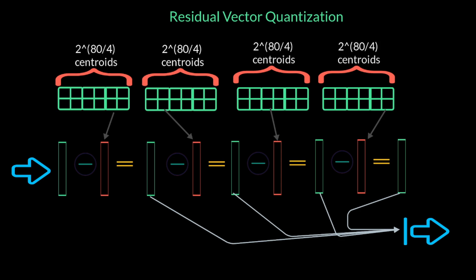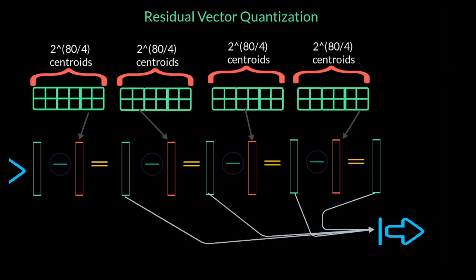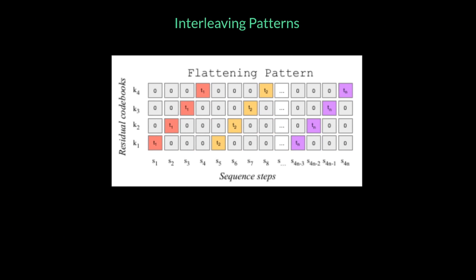The way MusicGen addresses these is by using interleaving patterns. Now, we get 4 outputs, k1, k2, k3 and k4, per input frame from the residual codebooks. There are different ways we can order them or interleave them before we feed them into the decoder.